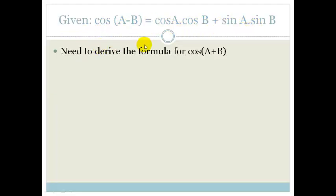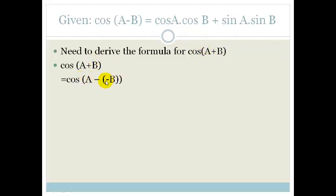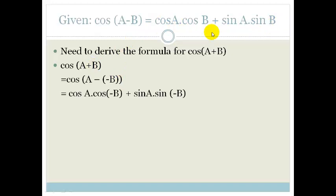We need to derive the formula for cos(A + B). We're going to change cos(A + B) into cos(A - (-B)), and then it looks like the original formula except that instead of B we now have minus B. So we can expand it: cos A cos(-B) + sin A sin(-B).